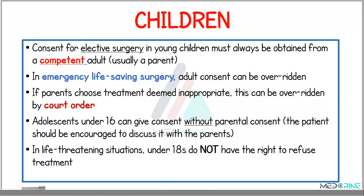When it comes to children, a consent for elective surgery in young children must always be obtained from a competent adult, who is usually the parent. In emergency or life-saving surgery, an adult's consent can be overridden by the surgeon's intervention. If a patient chooses treatment deemed inappropriate, it can be overridden by a court order — this comes in when some religions do not allow the patient to undergo procedures like blood transfusion, but the court can override that decision. Adolescents who are under the age of 18 can give consent without parental consent, and the patient should be encouraged to discuss this with their parents. In life-threatening situations, children under 18 do not have the right to refuse treatment.